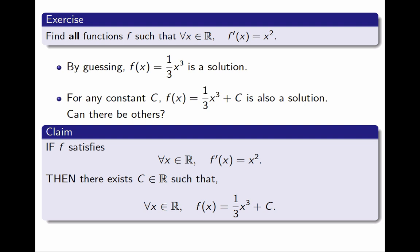I want to show that if a function satisfies this equation, if the derivative is x², then there must exist a constant c such that the function is one-third of x³ plus c. So that will guarantee that we are done. Fortunately, the proof is short with the things we know so far, and it's going to go in three steps.